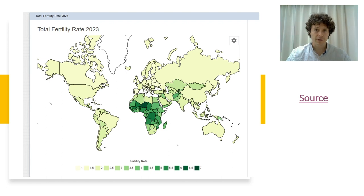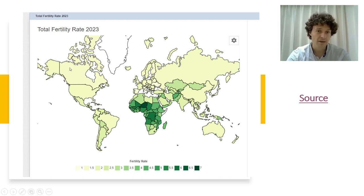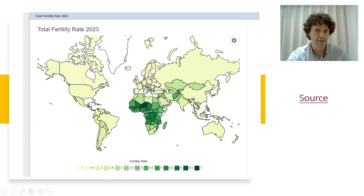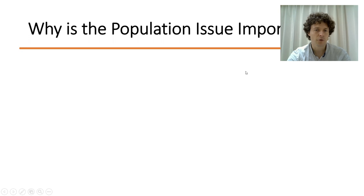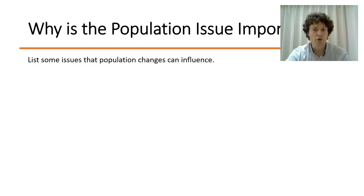If you look at the total fertility rate for the entire world, in most countries the fertility rate is between one and two. The same is true of Canada, the US, large parts of central and south America, Brazil, Australia, Russia, most of Europe, even some parts of Africa, the Arab world, and India and China are now also under two. Countries with significantly higher rates are mostly in Africa and a few in west and central Asia.